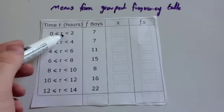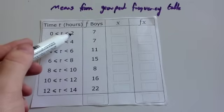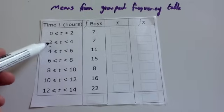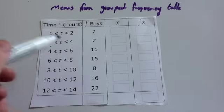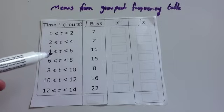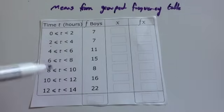This means the time is bigger than or equal to 0 but less than 2. Time is bigger than or equal to 2 but less than 4. Time is bigger than or equal to 4 but less than 6, and so on and so on.